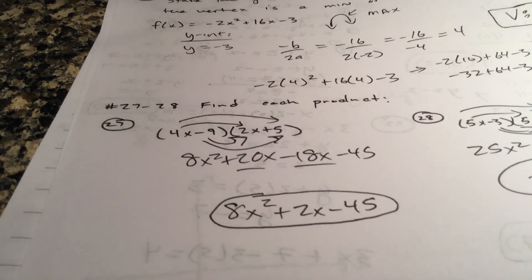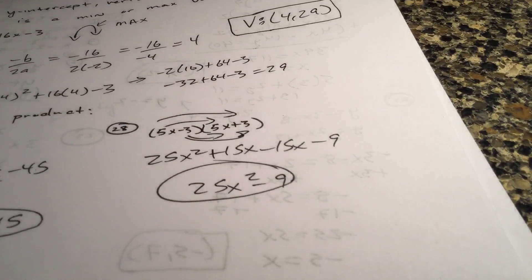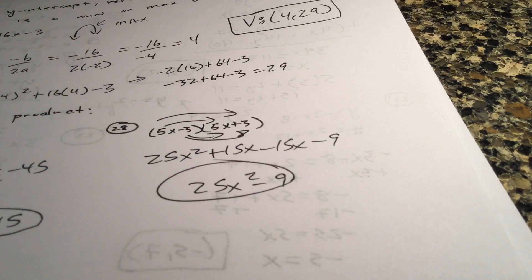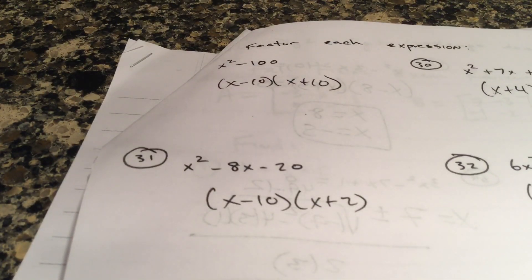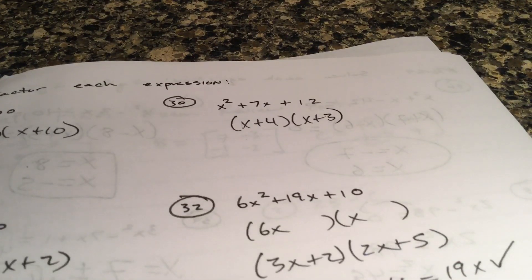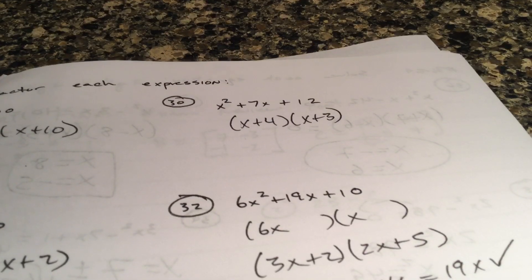Foil, first outer inner last on 27. First outer inner last, you have conjugate, so that's why the middle term is gone on 28. 29 to 32 factor, difference of two perfect squares. All right, one multiplies to 12, adds to seven, four and three, both positive.